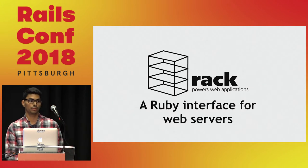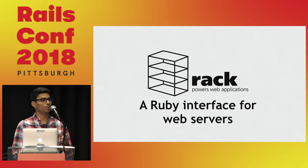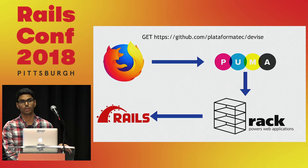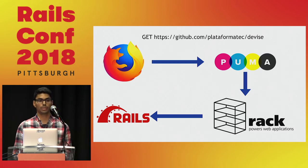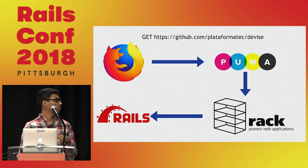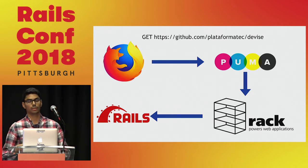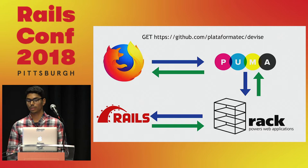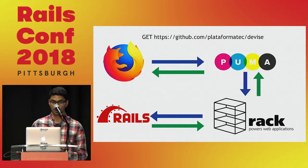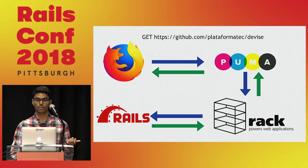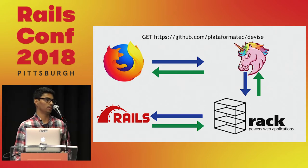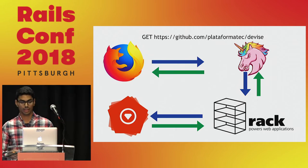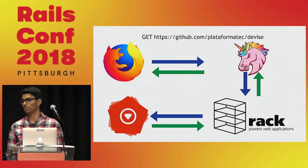Rack is a Ruby interface for web servers. Basically what it does is it unifies the API for both web servers and web frameworks in Ruby. When we start a request from a browser to a Rails application, it passes through a web server — here we're using Puma. Puma passes this request down through the Rails application in a format that conforms with the Rack API, and the same is true for the response. Because Rack unifies the request and response API, we can replace Puma with Unicorn or Passenger, and we can also replace Rails with Hanami or Sinatra, and everything still works.